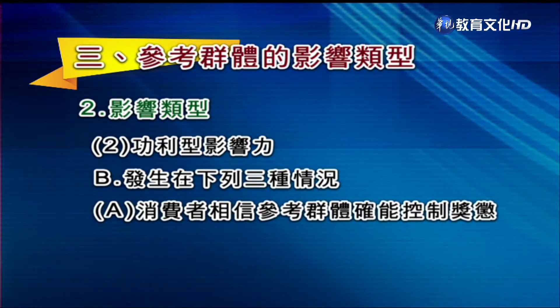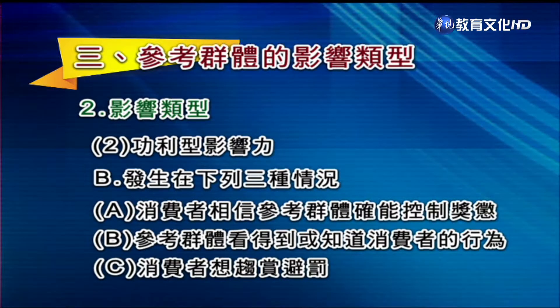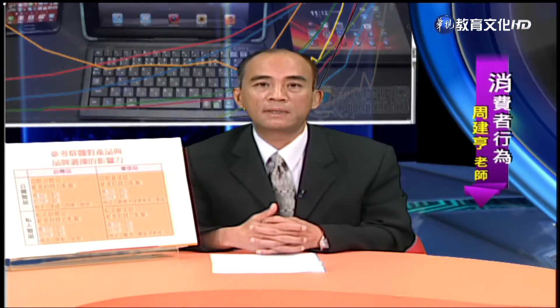第二种参考群体影响力是功利型影响力。功利型影响力发生在参考群体握有重要奖惩权利的时候。这个奖惩权利发生在：第一，消费者相信参考群体确实能够控制奖惩；第二，参考群体能够看到或知道消费者的行为；第三，消费者真的很想要趋赏避罚。